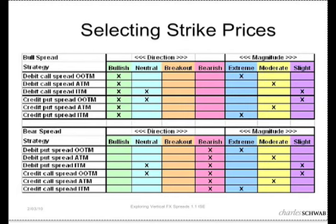Now this is a little table that I put together that is helpful in deciding what strike prices to choose. If you're bullish, you have two choices as we discussed: you can do a debit call spread or a credit put spread, but that doesn't help you decide what strike prices to choose. Every index — in many cases indexes have strikes every dollar, and some have them every two and a half dollars — so there are a lot of them and many different strikes to choose from.